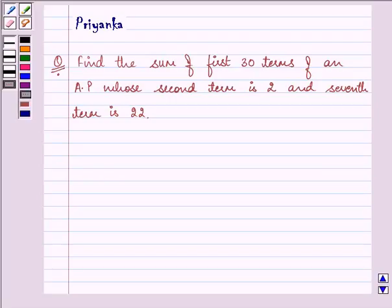Hello friends and how are you all doing today? The question says, find the sum of first 30 terms of an AP whose second term is 2 and seventh term is 22.